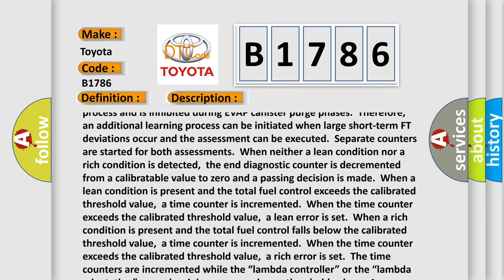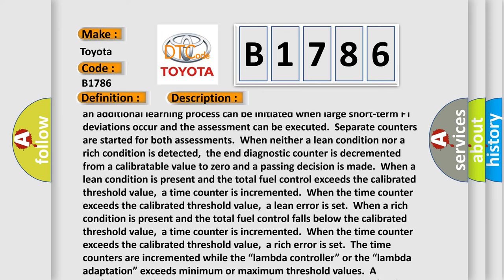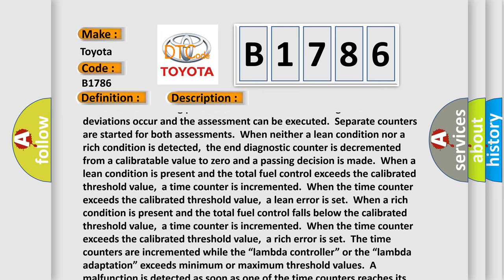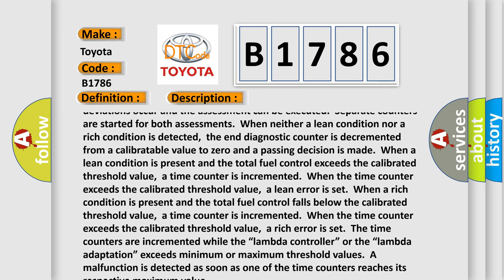Separate counters are started for both assessments when neither a lean condition nor a rich condition is detected. The diagnostic counter is decremented from a calibratable value to zero and a passing decision is made when a lean condition is present and the total fuel control exceeds the calibrated threshold value.